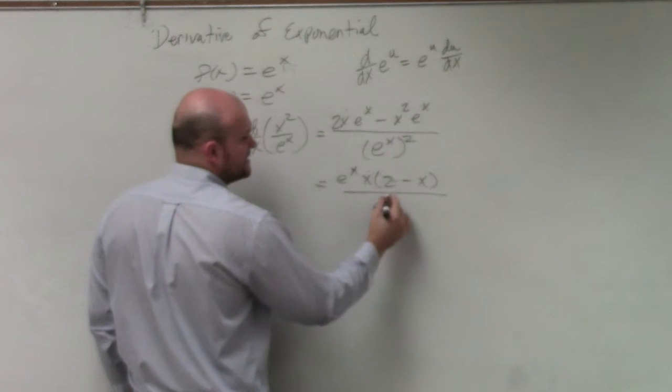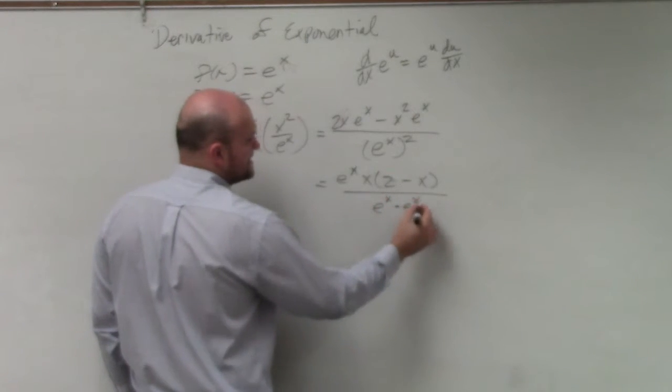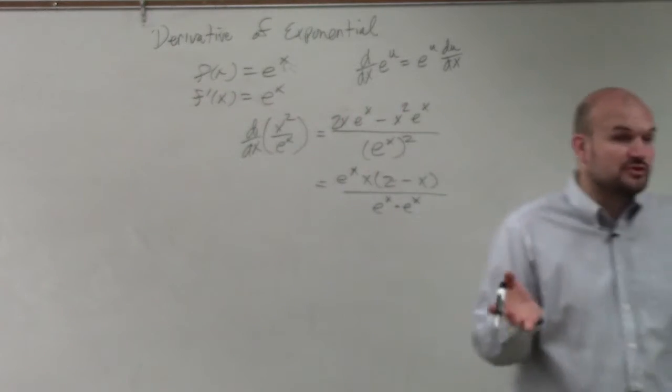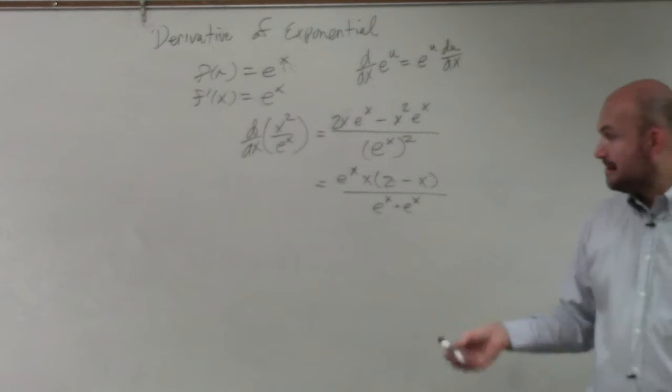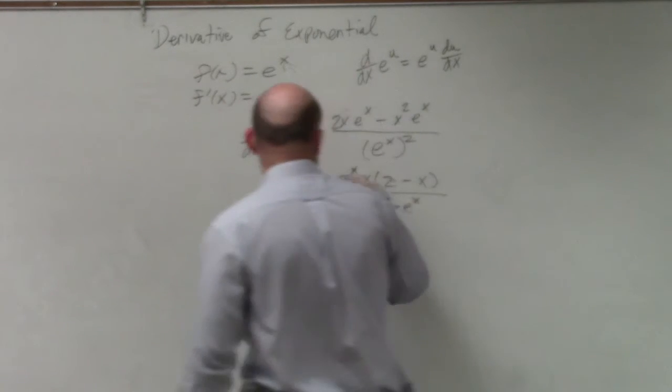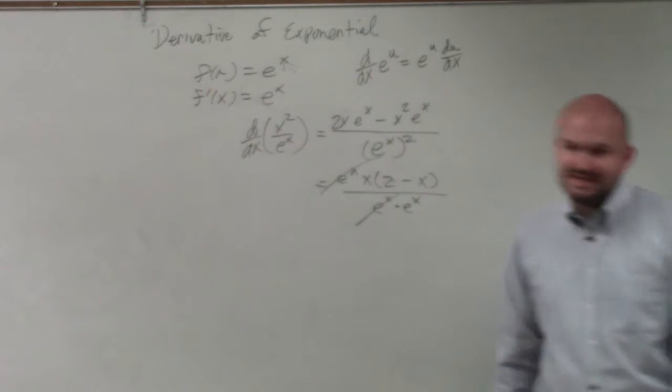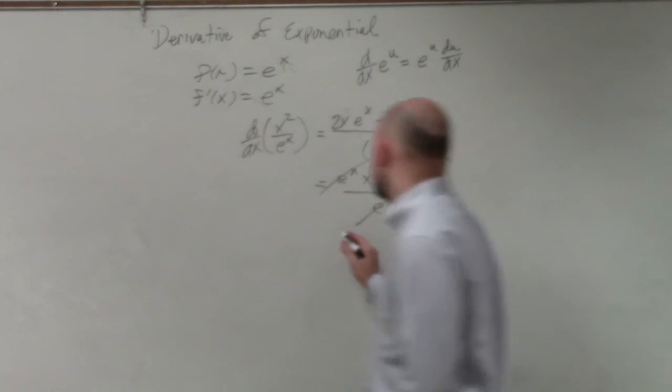And then just remember, e to the x is e to the x squared is e to the x times e to the x. You could take that as e to the 2x. But if you leave it as e to the x divided by e to the x,